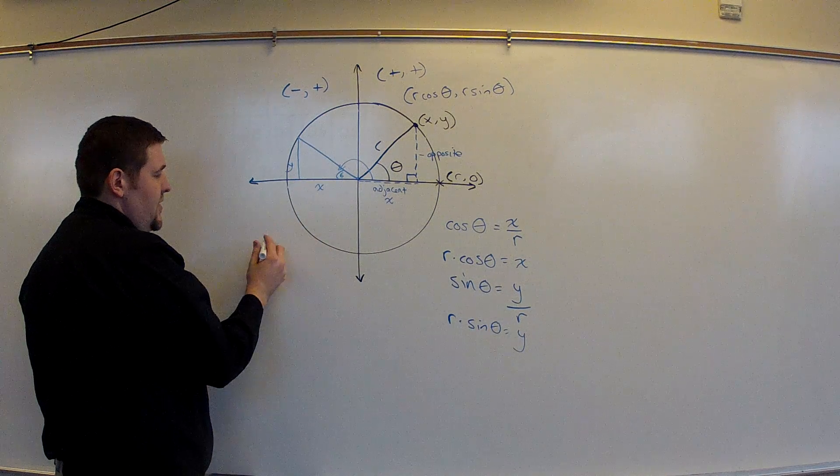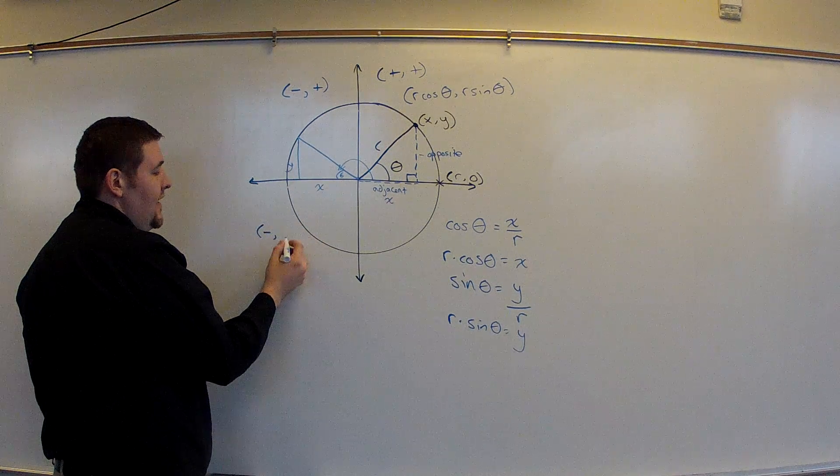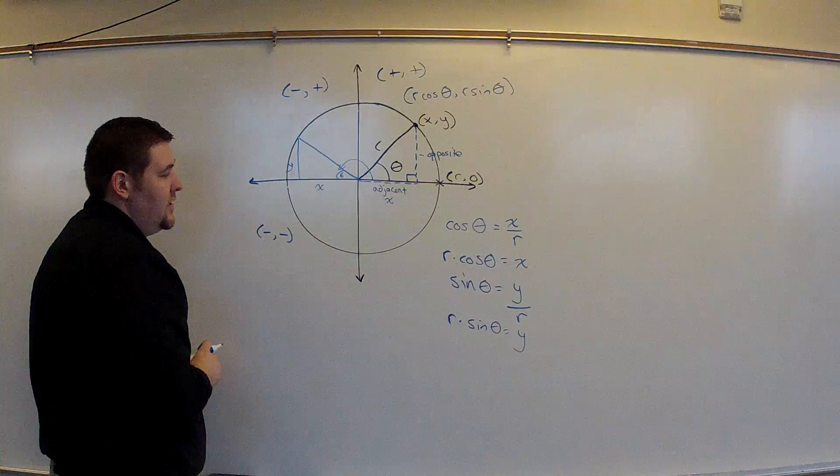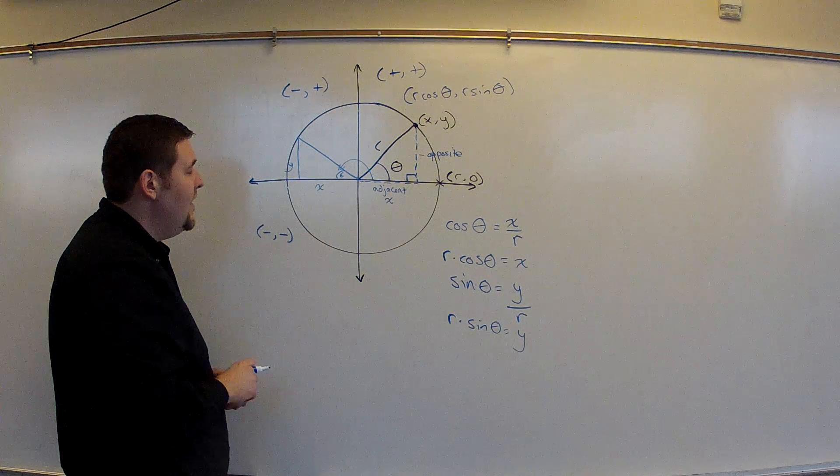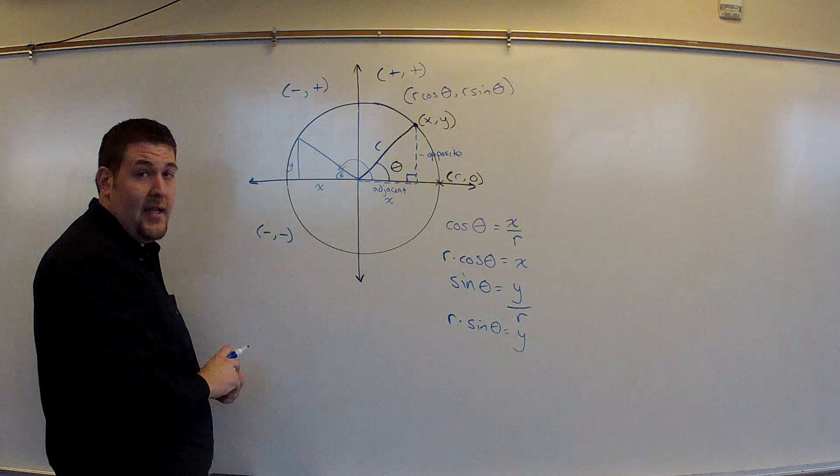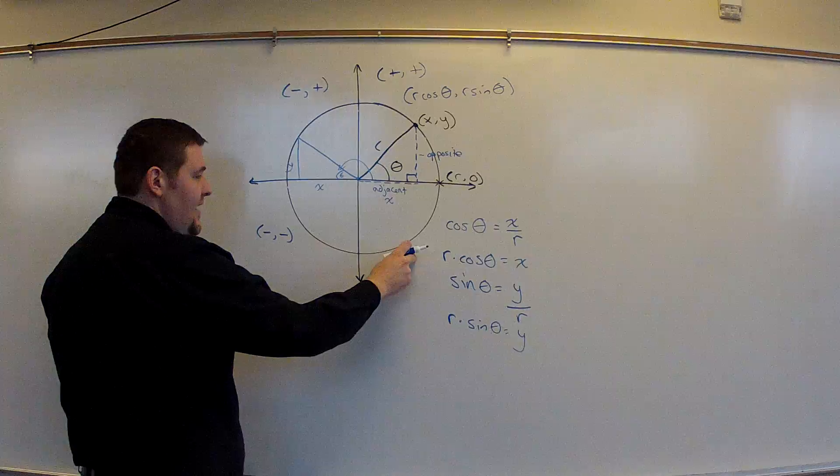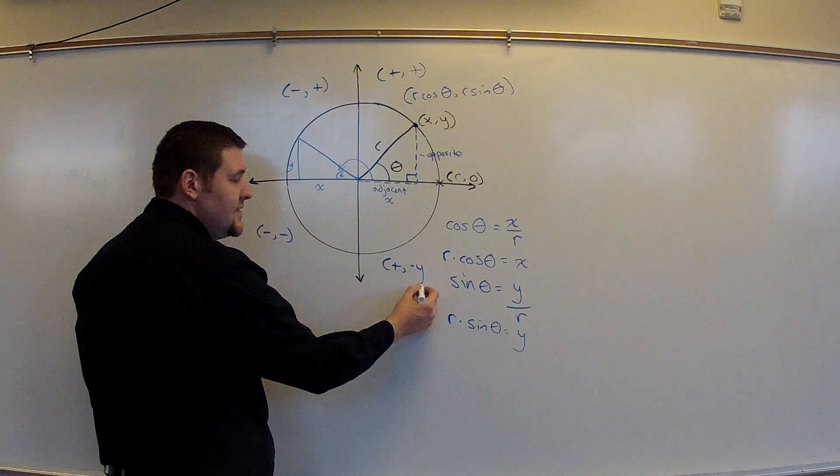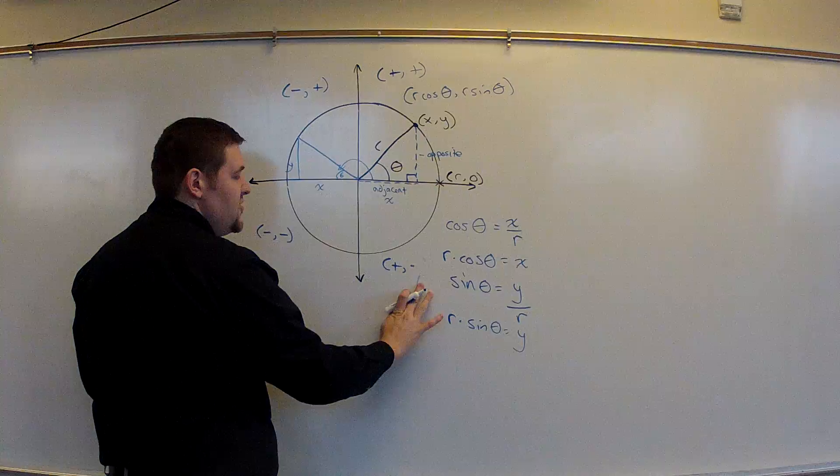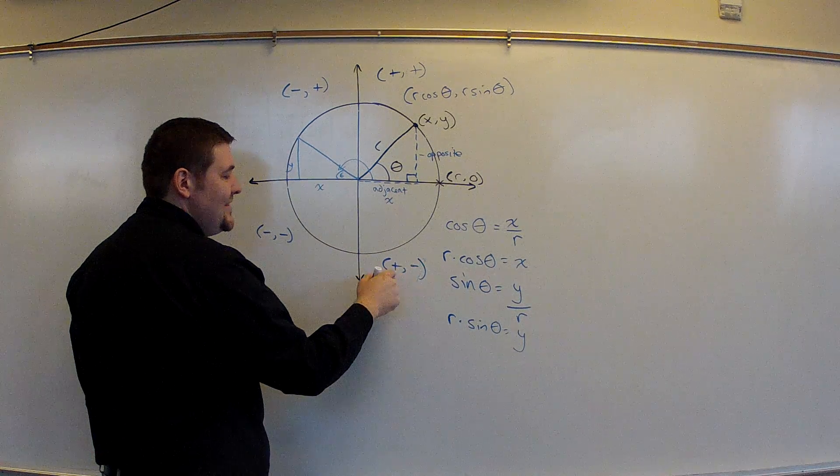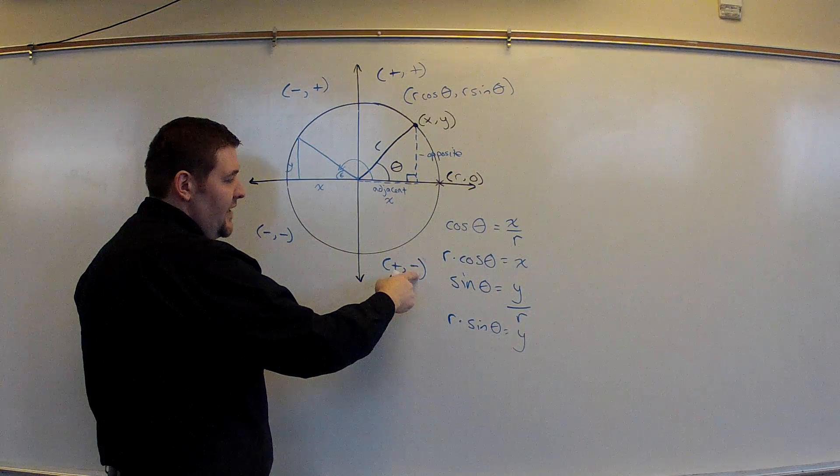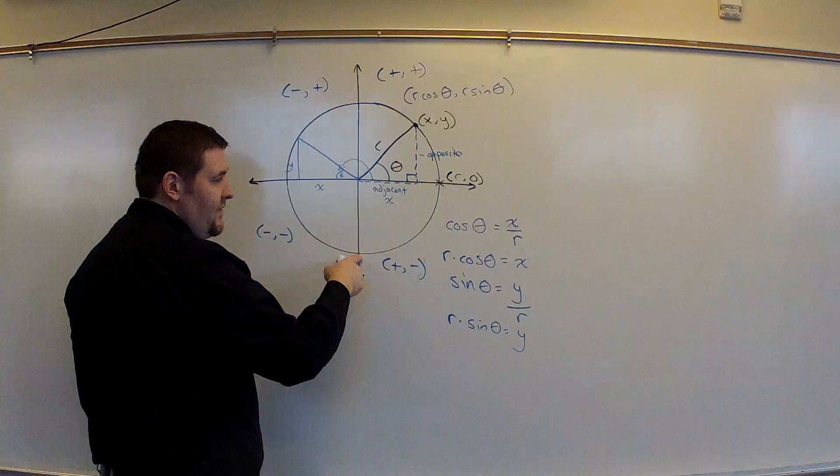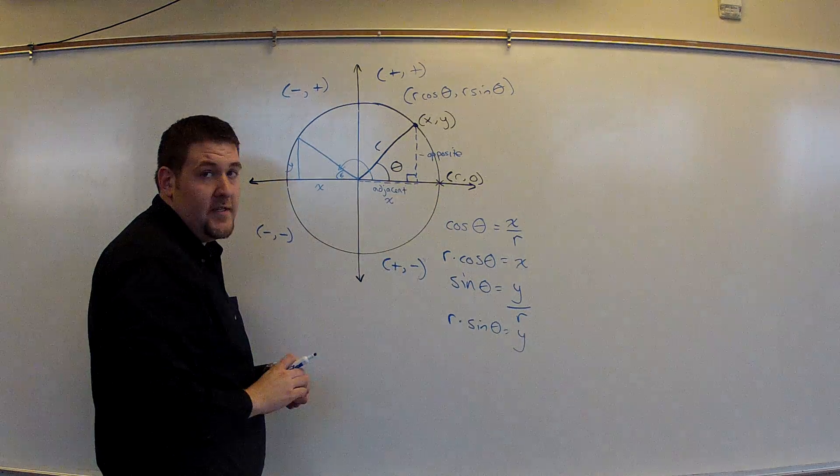As we go down into the third quadrant, x values are still negative, and now our y values are also negative. X and y are negative, therefore cosine and sine are both negative in this quadrant. In the last quadrant, we have positive x's and we have negative y's, which make this quadrant positive cosines and negative sines from 270 degrees back to 360 degrees.